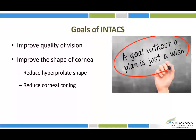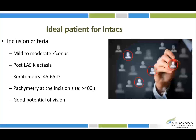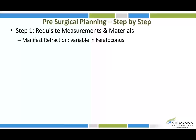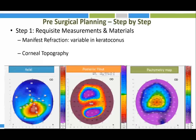When the INTACS ring is inserted into the cornea, it increases the bulk of the cornea, stretching the central cornea and causing relative flattening. The aim is to improve quality of vision by changing the position of the cone, altering corneal shape, and reducing steepness. Ideal candidates include patients with mild to moderate keratoconus or post-LASIK ectasia, with K values ranging from 45 to 65 diopters, pachymetry at the incision site in the 7 mm zone of at least 400 microns, and good visual potential without scars in the visual axis.